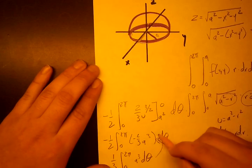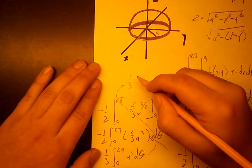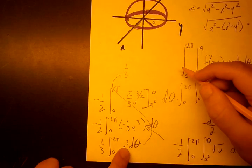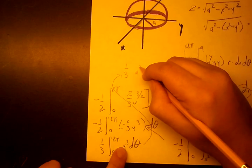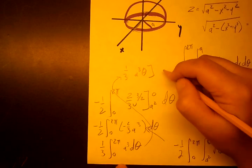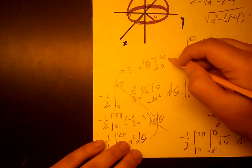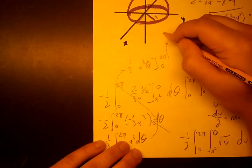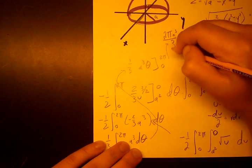And when we take this, I'll choose a bigger paper next time, we're going to have 1 third. When we take the integral of this, since this is with respect to theta, this is a constant. So we're going to have a cubed theta from 0 to 2 pi. And when we do that, we're going to have 2 pi a cubed over 3.